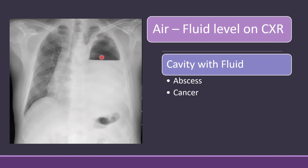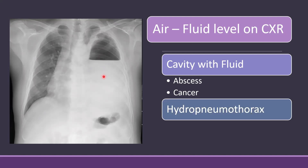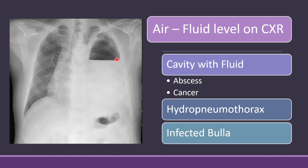The second cause of an air fluid level is a hydropneumothorax. As you know from previous videos, an effusion does not give a straight level — in effusion there is a concavity, or a meniscus sign is present. So when a straight level is present, you should not call it a pleural effusion; you should call it a hydropneumothorax.